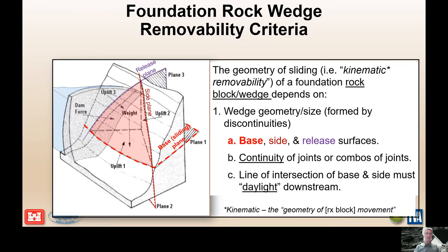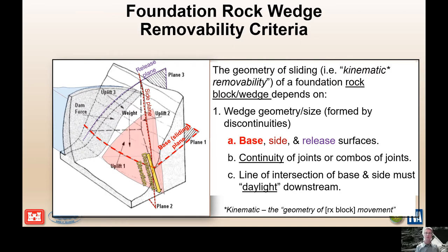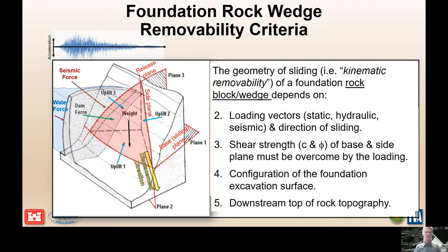We have to have a base plane that we slide on, a side plane that we slide along, and a release surface back at the heel. The continuity of these joints or combinations of joints is extremely important. The line of intersection of the base and side plane needs to daylight in the downstream topography, allowing this wedge to kinematically displace outward and downstream, causing distress and structural damage. We also need to think about loading vectors — static, hydraulic, and seismic — applied onto the dam and onto the wedge relative to the sliding direction.